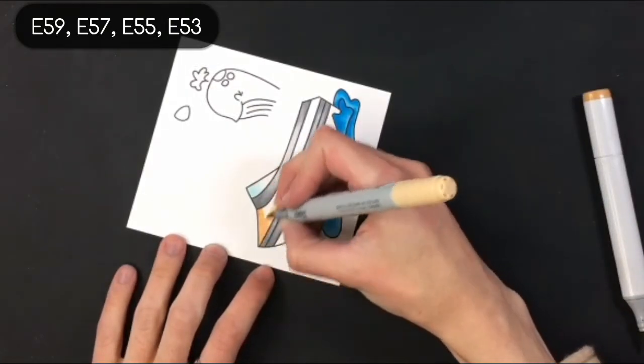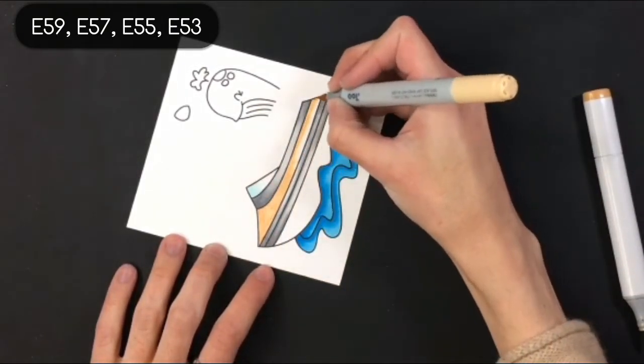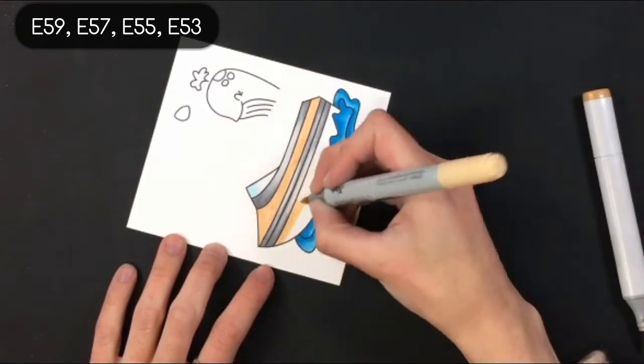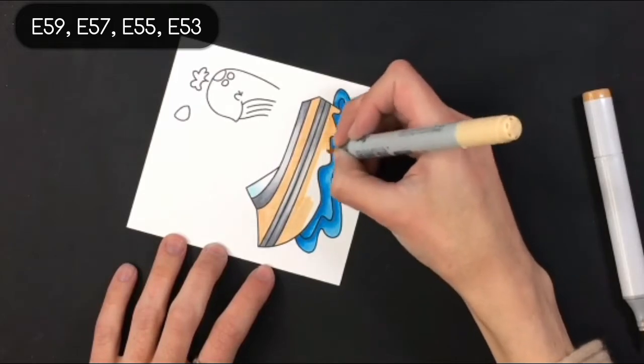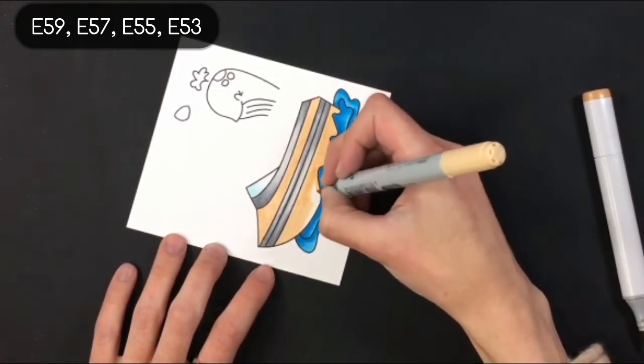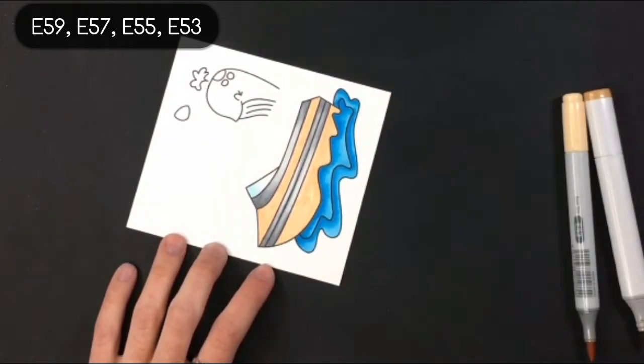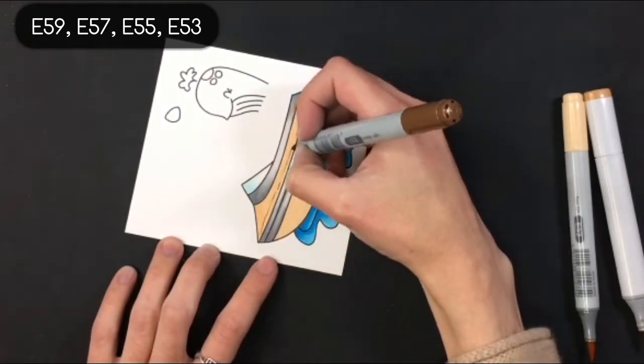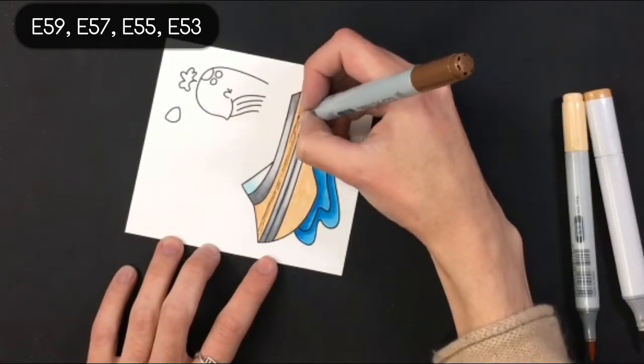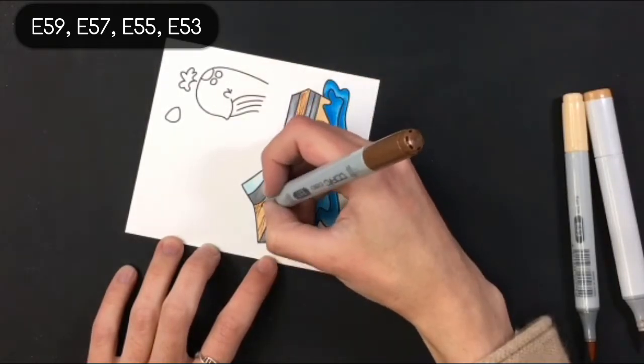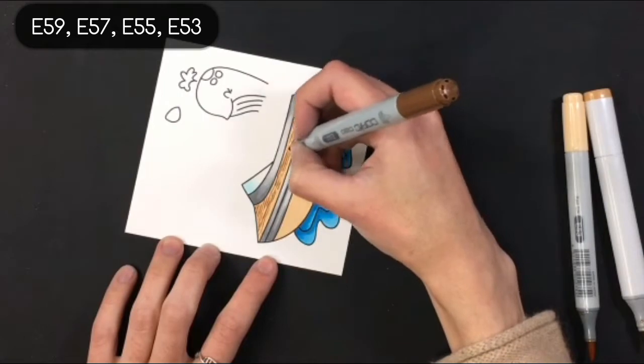So I start by coming in with my lightest color which is E53 and I'm just doing a simple coat over the whole thing with that. Then once that is done I'm going to come in with my second darkest color because I'm a little bit risk averse and I'm just going to put in some really really simple lines. You want to use a very light pressure so your marker is just barely grazing the page, that way it's going to make some really thin lines.